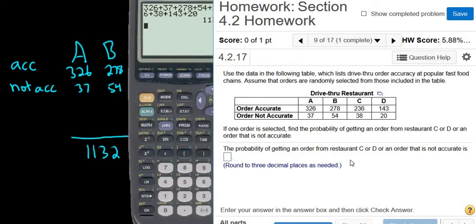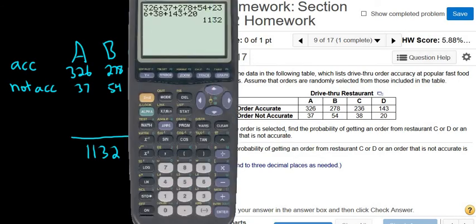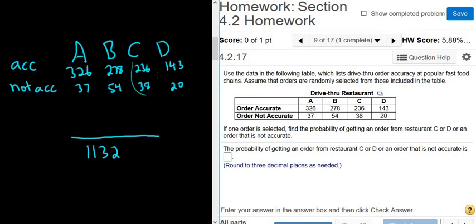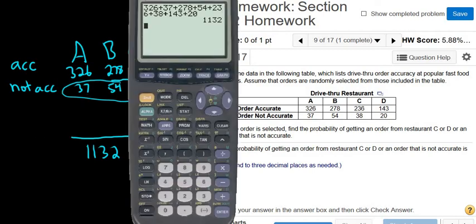So it's an addition rule problem, and we know that because of the OR. Well, whenever you have a table and an OR, all you do is circle and add. So we go to restaurant C and we circle the restaurant C's. Or D, so we circle the D's. Or an order that is not accurate, so we circle the not accurates. You'll notice some things are circled twice. No worries though, you only add them once. So after you circle everything, then you just add everything up in your calculator.